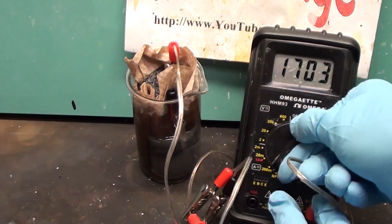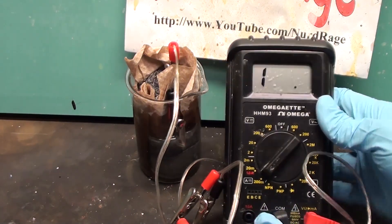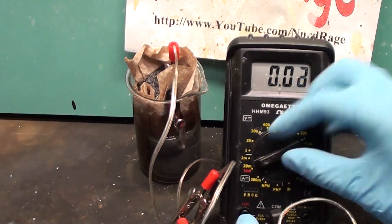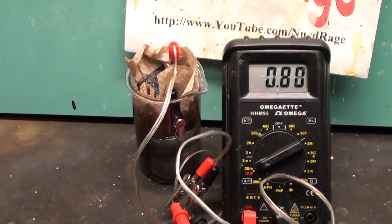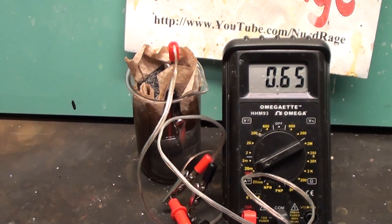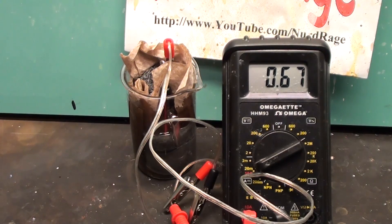Let me measure the current. Whoa, it's off the scale. Let me switch the multimeter to high current mode. Let's give it a few minutes to stabilize. The current is very good at 0.67 to 0.68 amps.